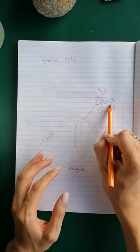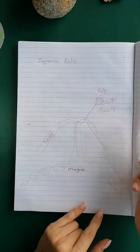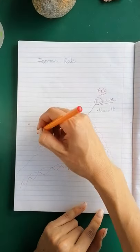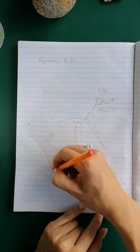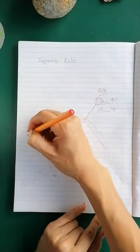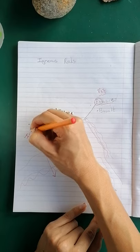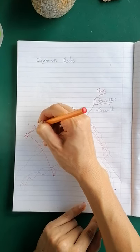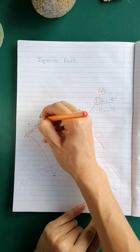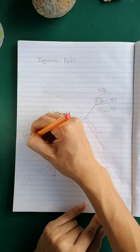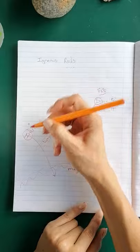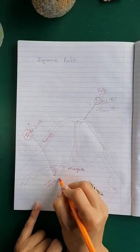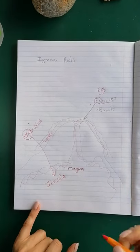That's the extrusive igneous rock. The next type of igneous rock we'll be looking at is what we call intrusive — intrusive just simply coming from the idea that it is inside the earth still.